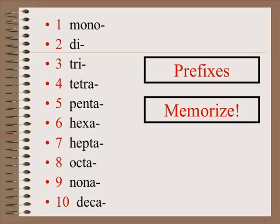Here's a list of those prefixes that you will need to know. Mono meaning one, two is di, three is tri, four is tetra, and then penta, hexa, hepta, octa, nona, and deca.